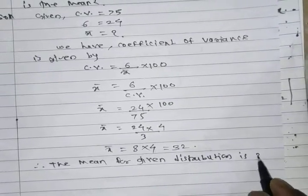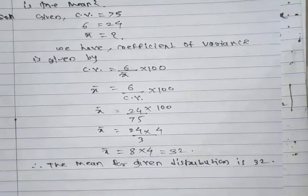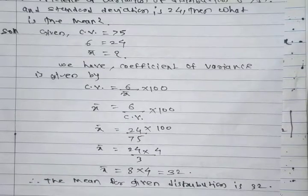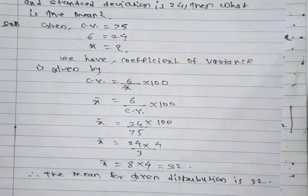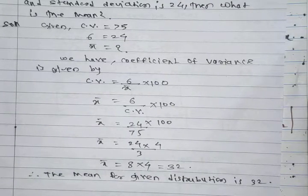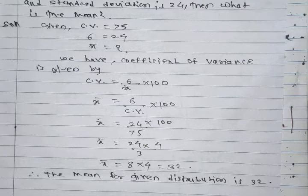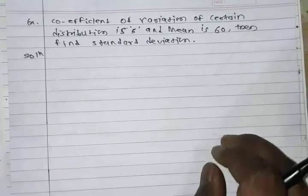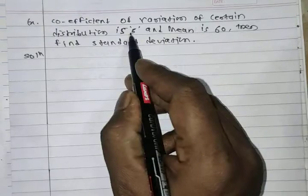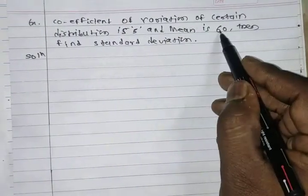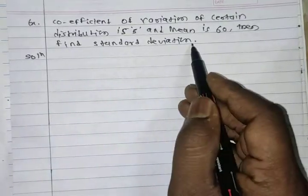So in this way, from the given information we can calculate the value of one unknown. Next example: the coefficient of variation of a certain distribution is 5 and the mean is 60. Find the standard deviation.